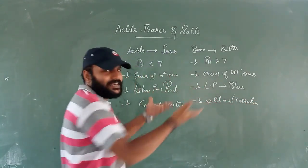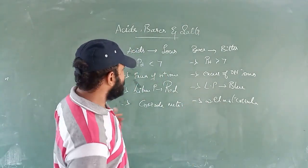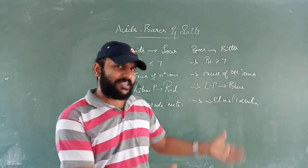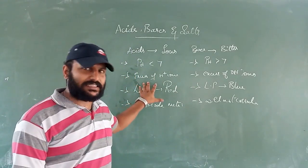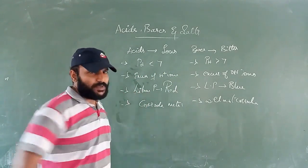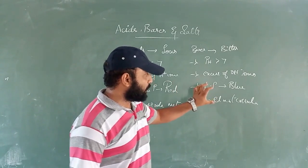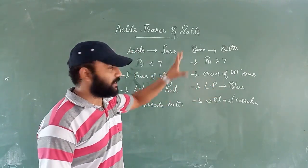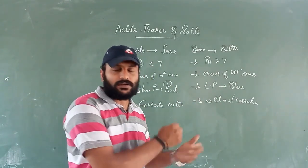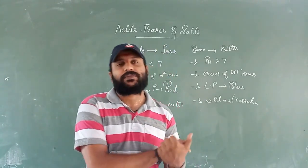So these are the basic differences learned in lower classes: acids are sour in taste, bases are bitter in taste; acid pH is less than 7, base pH is greater than 7; acids contain excess H⁺ ions, bases contain excess OH⁻ ions; acids turn litmus paper red, bases turn litmus paper blue; acids corrode metals, bases do not corrode metals.